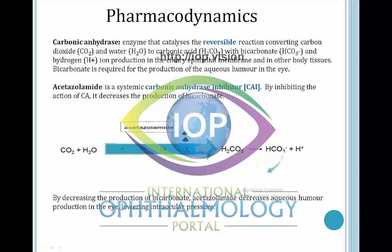By decreasing the production of bicarbonate, acetazolamide decreases aqueous humor production, thereby lowering intraocular pressure.